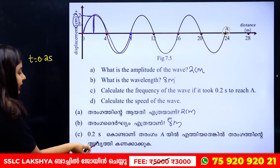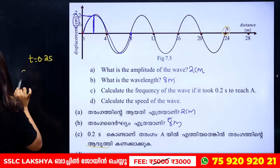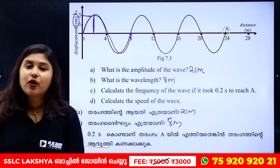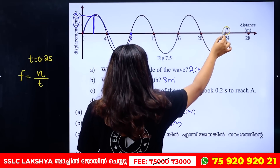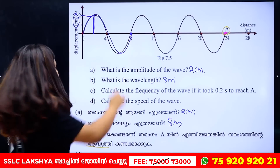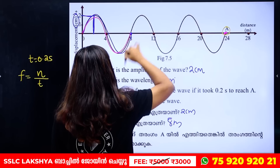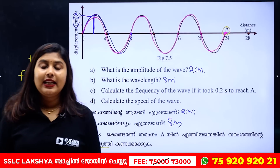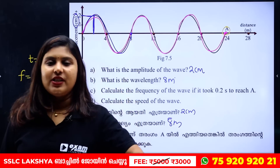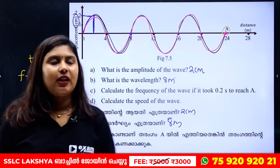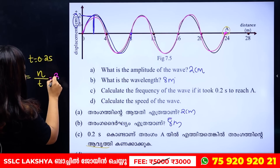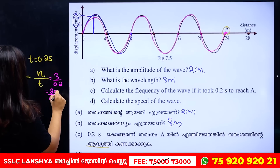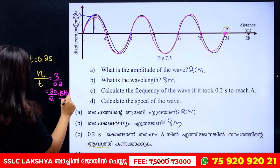What we are doing is finding the frequency. Frequency equals number of vibrations divided by time. Looking at the wave diagram: wave 1, wave 2, wave 3 — so 3 vibrations in 0.2 seconds. That gives 3 divided by 0.2, which is 30 divided by 2, equals 15 Hz.